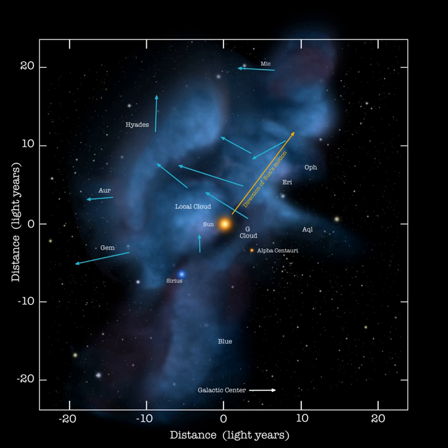The Local Interstellar Cloud, LIC, also known as the Local Fluff, is the interstellar cloud roughly 30 light-years across through which the solar system is currently moving. It is currently unknown if the sun is embedded in the Local Interstellar Cloud, or in the region where the Local Interstellar Cloud is interacting with the neighboring G-Cloud.